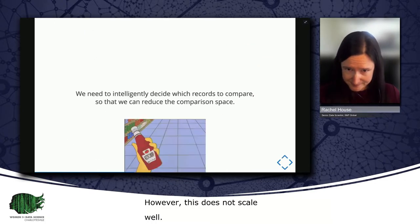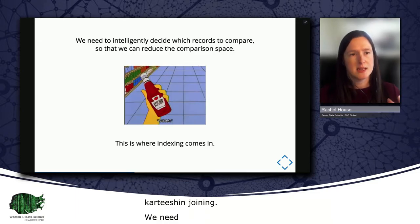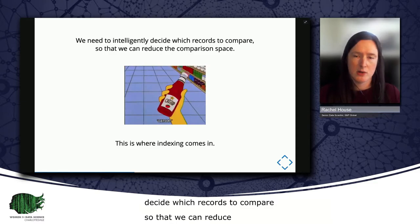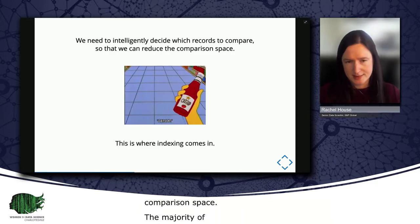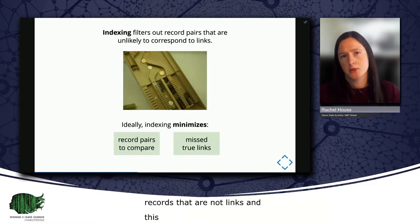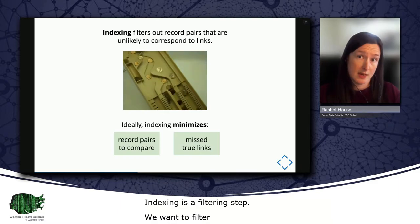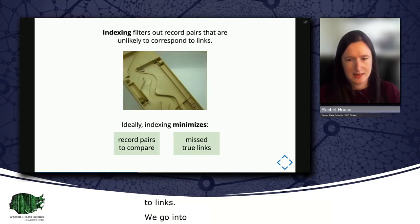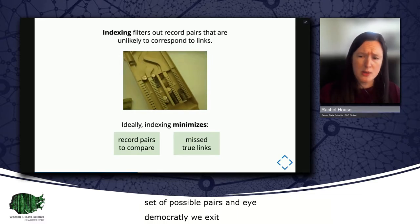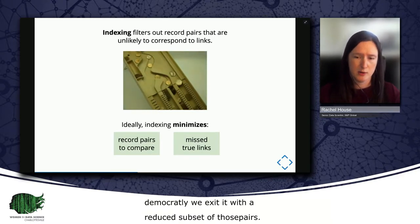We need to be able to selectively and intelligently decide which records to compare so that we can reduce the comparison space. And the majority of comparisons that we will make will be between records that are not links. And this is where indexing comes in. So at its heart, indexing is really just a filtering step. We want to filter out record pairs that are unlikely to correspond to links. And we go into the indexing step with the full set of possible pairs. And ideally, we exit the indexing step with a vastly reduced subset of those record pairs that are then sent to comparison. We also want to minimize our missed true links. Namely, we don't want our indexing step to filter out record pairs that actually are links.